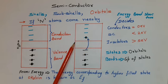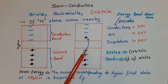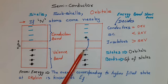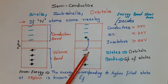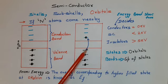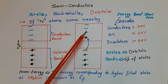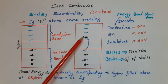When an electron moves from the valence band, it leaves an empty state, and that empty state is known as a hole. In case of an intrinsic semiconductor — intrinsic means pure semiconductor — the number of electrons present in the conduction band equals the number of holes left in the valence band. Therefore, in an intrinsic semiconductor, the number of electrons and the number of holes are always the same.